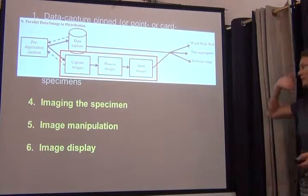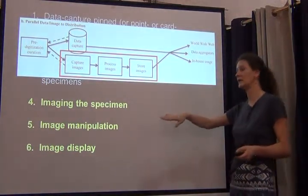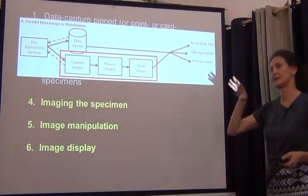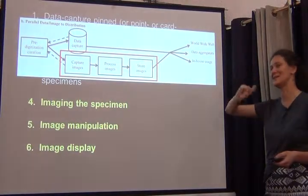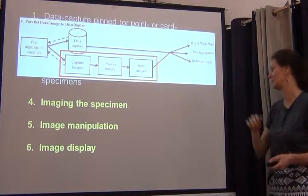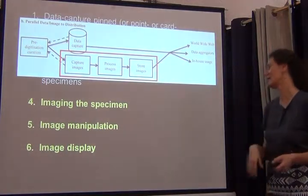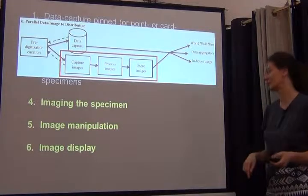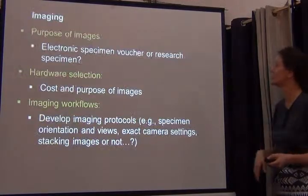There are going to be three sections: imaging of specimens, a few things on image manipulation — which is very specific to small 3D specimen considerations that might not be as important for the botanical world — and then image display.